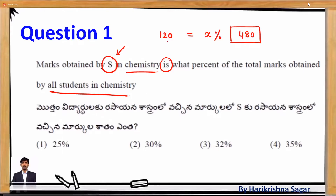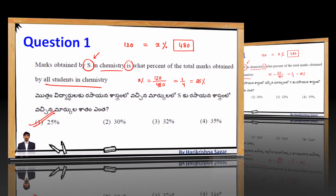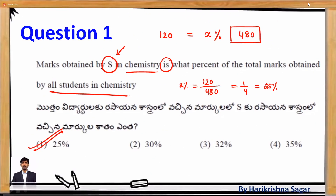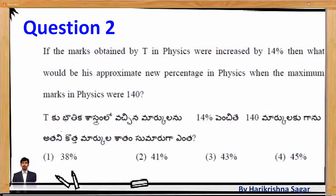So the question is: 120 is what percentage of 480? That gives 120/480 = 1/4 = 25%. The answer is option 1.